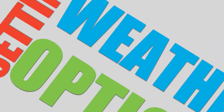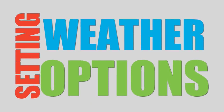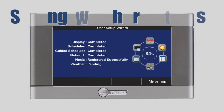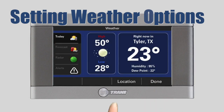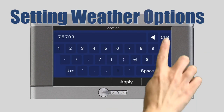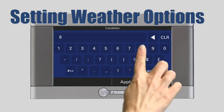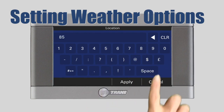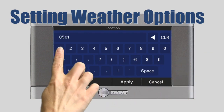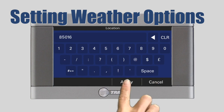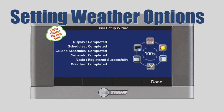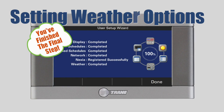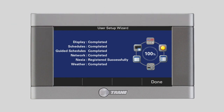Setting Weather Options. The final step in the User Setup Wizard is to enter your zip code into the control. Press Next and then press Location. Using the keypad, erase the current zip code and enter your zip code. Press Apply and Done. The status screen will indicate that you have completed all six steps in the Setup Wizard. To continue, press Done and Home.